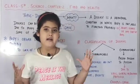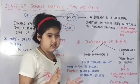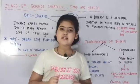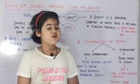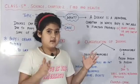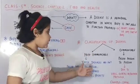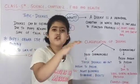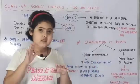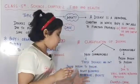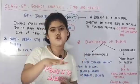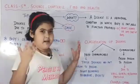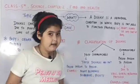Now let's see the classification of diseases. We have divided diseases into two parts: firstly, non-communicable diseases, and second, communicable diseases. Non-communicable diseases are not spread from person to person. Examples include night blindness, beriberi, and rickets.